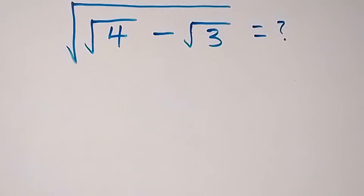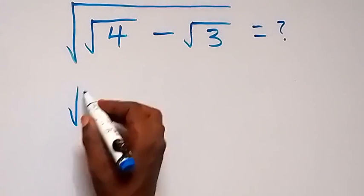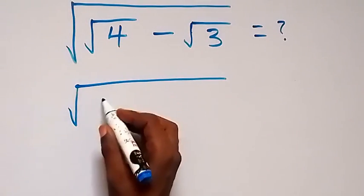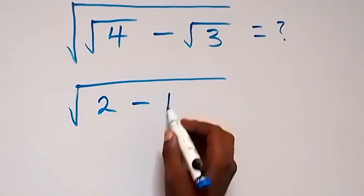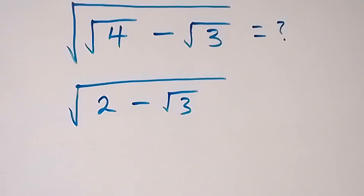Hello, you are welcome to solve this nice math problem. We have square root of root 4 minus root 3. Here we can write the square root of root 4, that's 2, then minus root 3.